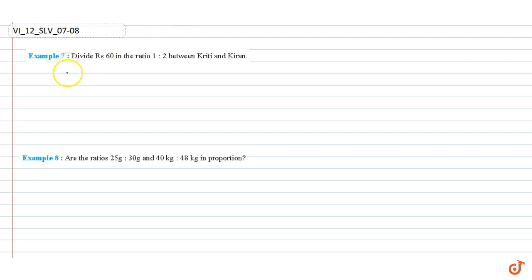It is given that sum of the parts equal to 1 plus 2 equal to 3. So we can say that out of 3 parts Krithi gets 1 part, and out of 3 parts Kiran gets 2 parts. Therefore,